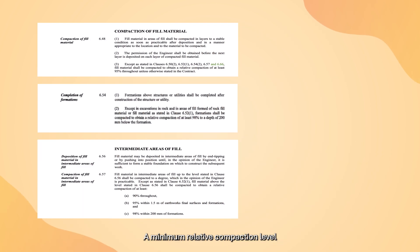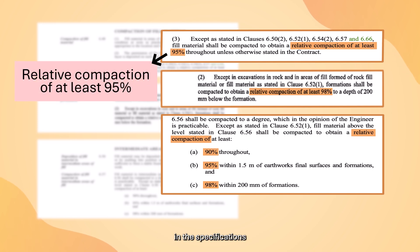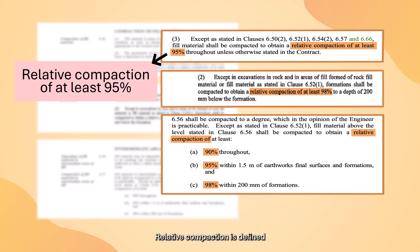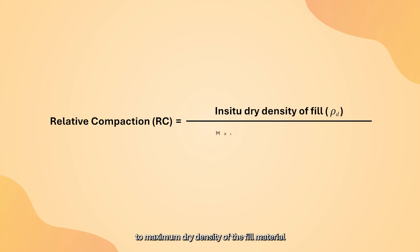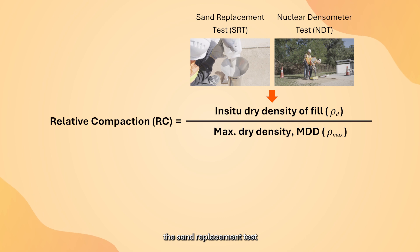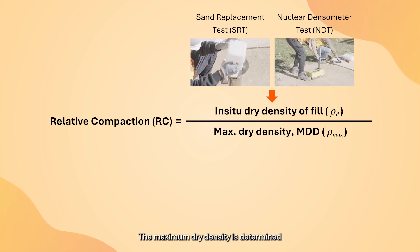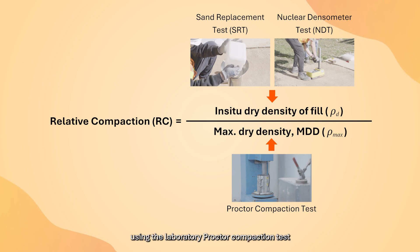A minimum relative compaction level, for example 95%, is commonly stated in the specifications as a compliance requirement for compacted fill material. Relative compaction is defined as the ratio of in-situ dry density to maximum dry density of the fill material. In Hong Kong, the in-situ fill density is determined from either the sand replacement test or the nuclear densometer test, while the maximum dry density is determined using the laboratory proctor compaction test.